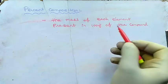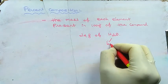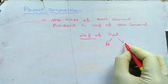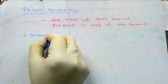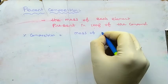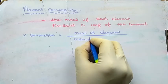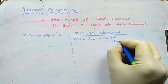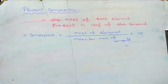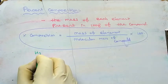Next we are going to see percentage composition. Percent composition is the mass of each element present in 100 grams of a compound. To find out the mass of each element in a molecule, we use: percent composition = (mass of each element in the compound ÷ molecular mass of the compound) × 100.